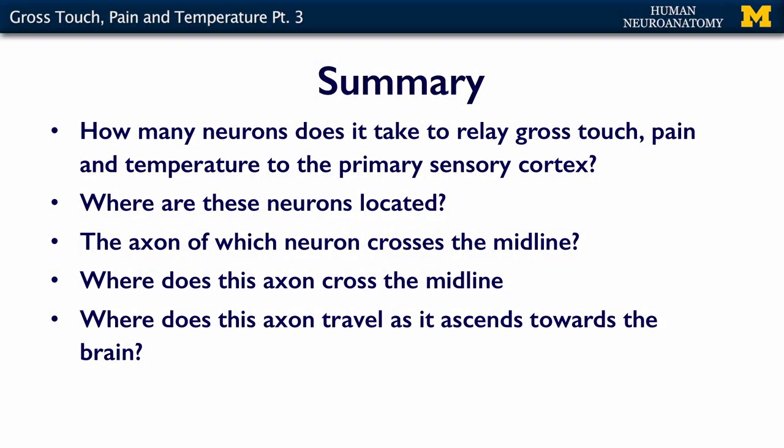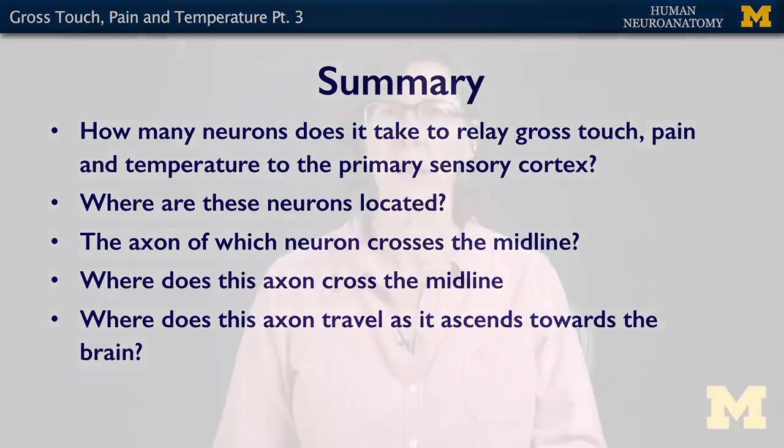And you're going to ask, well, why do I need to know this? Because fine touch is different, and we'll talk about that in the next section. To summarize, what I want you to know is: how many neurons does it take to relay gross touch, pain, and temperature from the periphery to the primary sensory cortex? Where are these neurons located? The axon of which neuron in the chain crosses the midline? Where does this axon cross the midline? And where does this axon travel as it ascends towards the brain — what is the name of that tract? If you know this, you're going to be ready for the assessment.